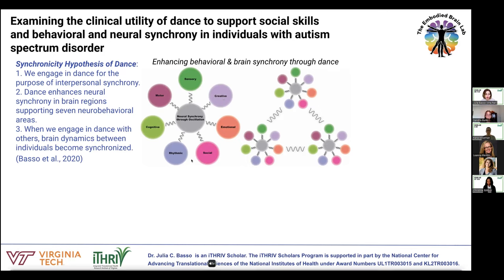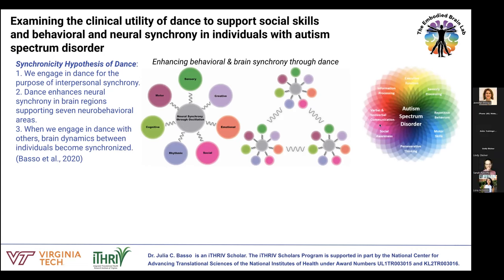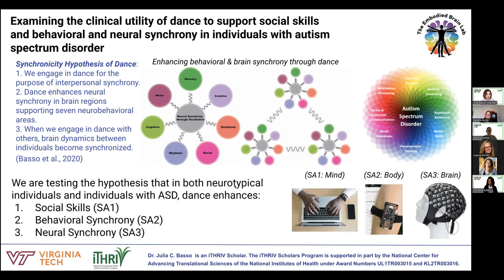When we engage in dance with others, brain dynamics between individuals become synchronized — we can train this phenomenon called interbrain synchrony. Clinically speaking, this is relevant for individuals with autism spectrum disorder, where there are differences in motor and sensory processing and in verbal and non-verbal communication skills — differences in social elements of behavior. The proposal is to test whether dance can be used to train social skills and behavioral and neural synchrony in both neurotypical individuals and individuals with autism spectrum disorder.